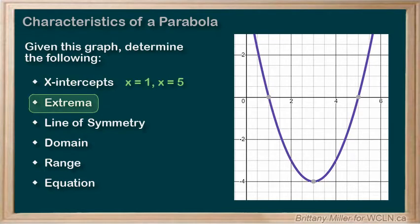The extrema always occurs at the vertex. The vertex of this function is 3, negative 4. The parabola opens upwards so this is a minimum of y equals negative 4.